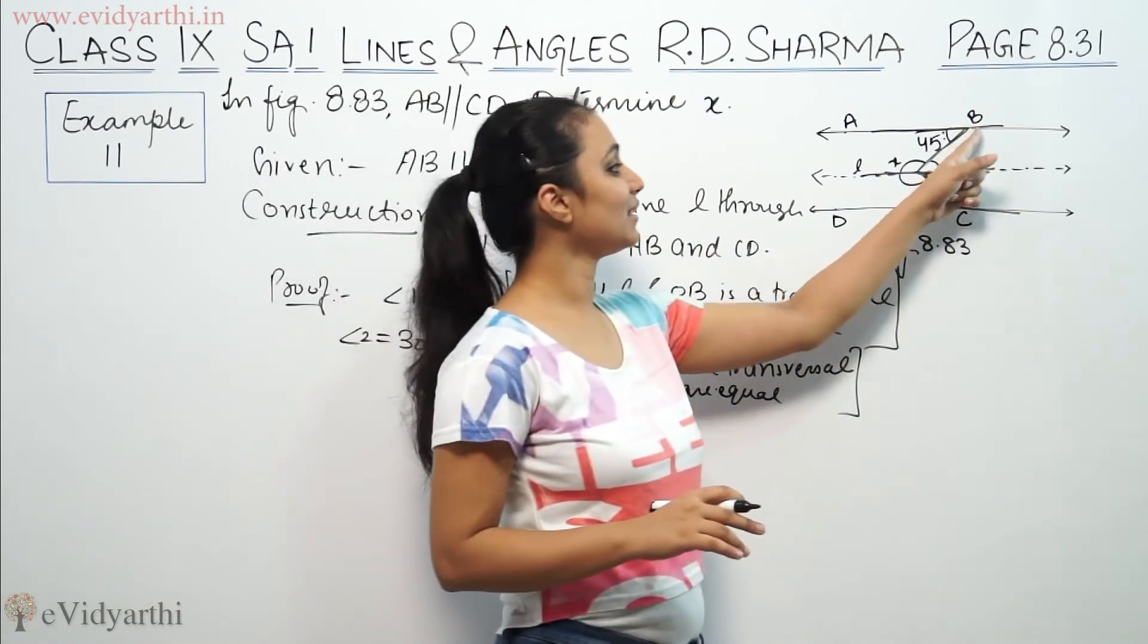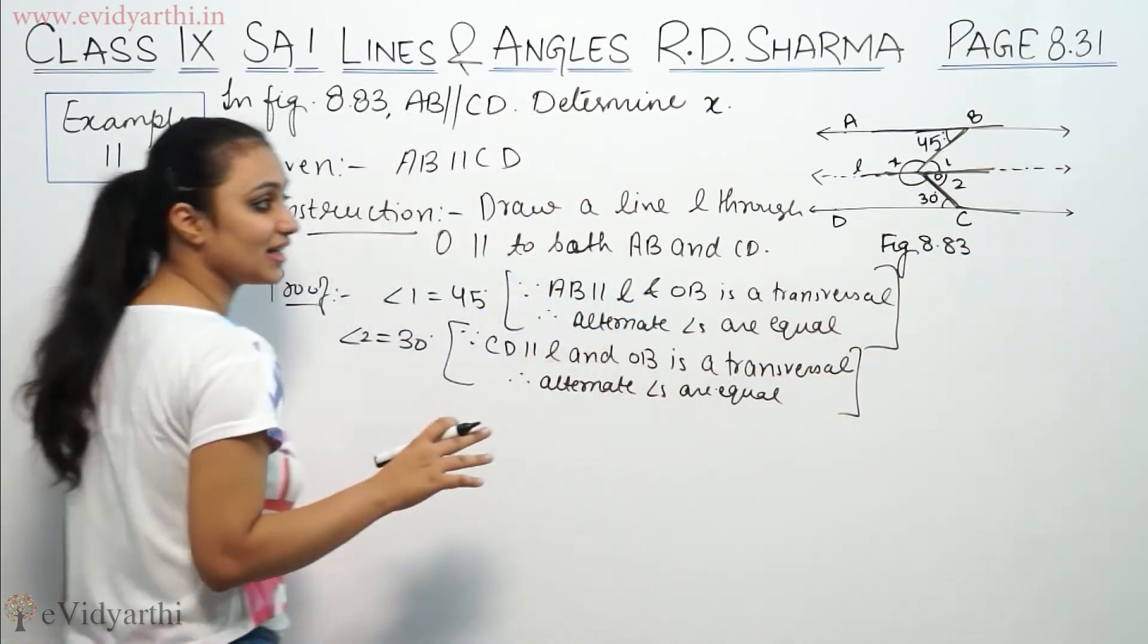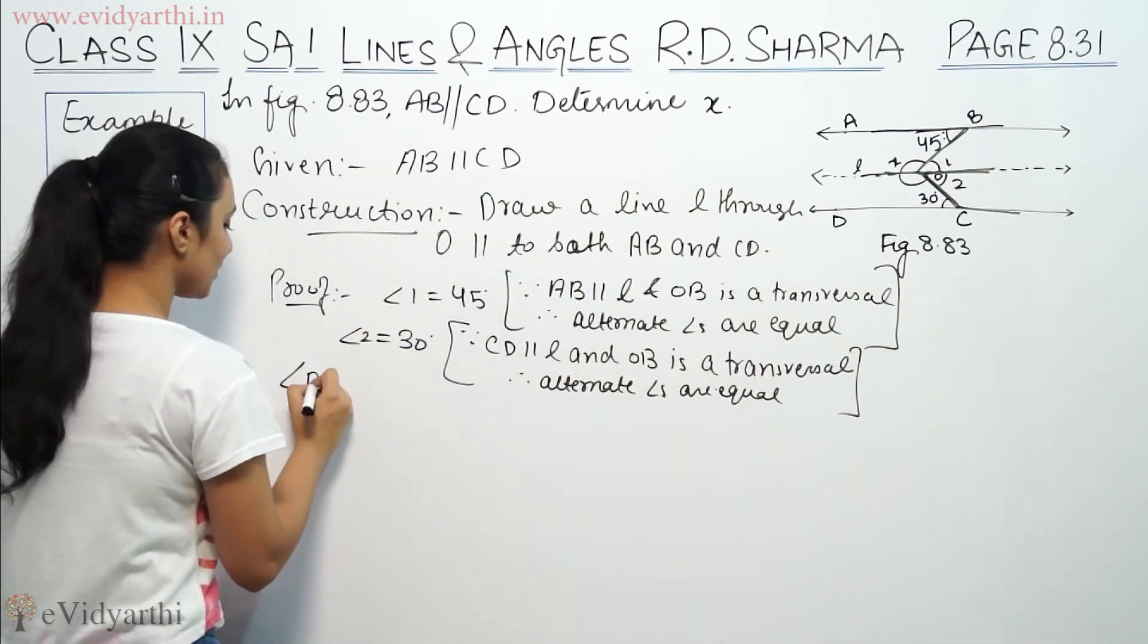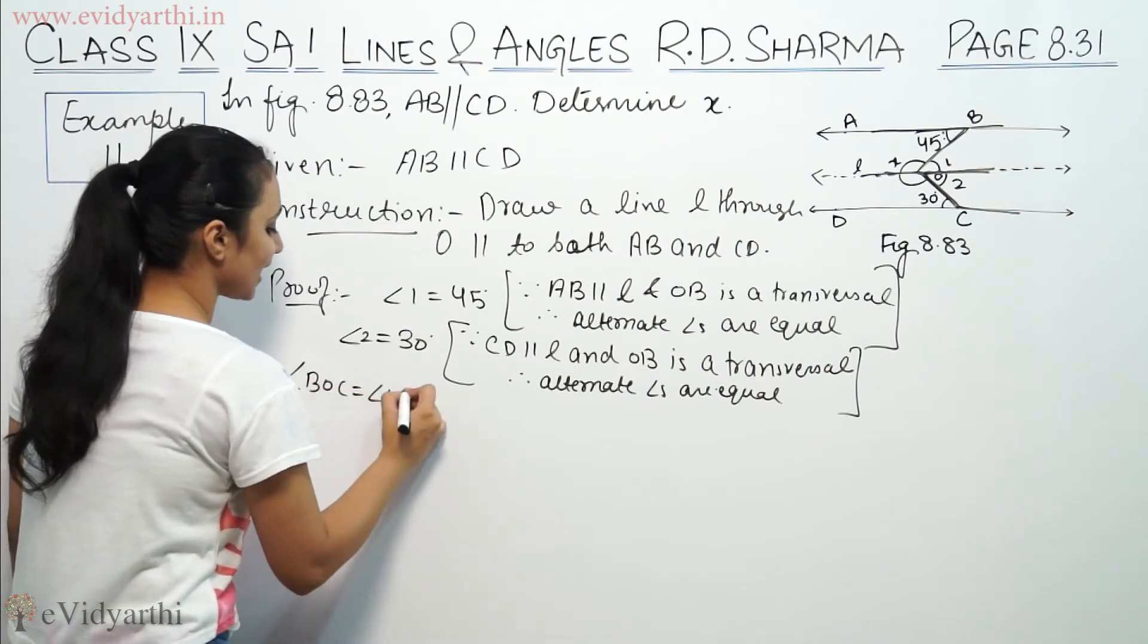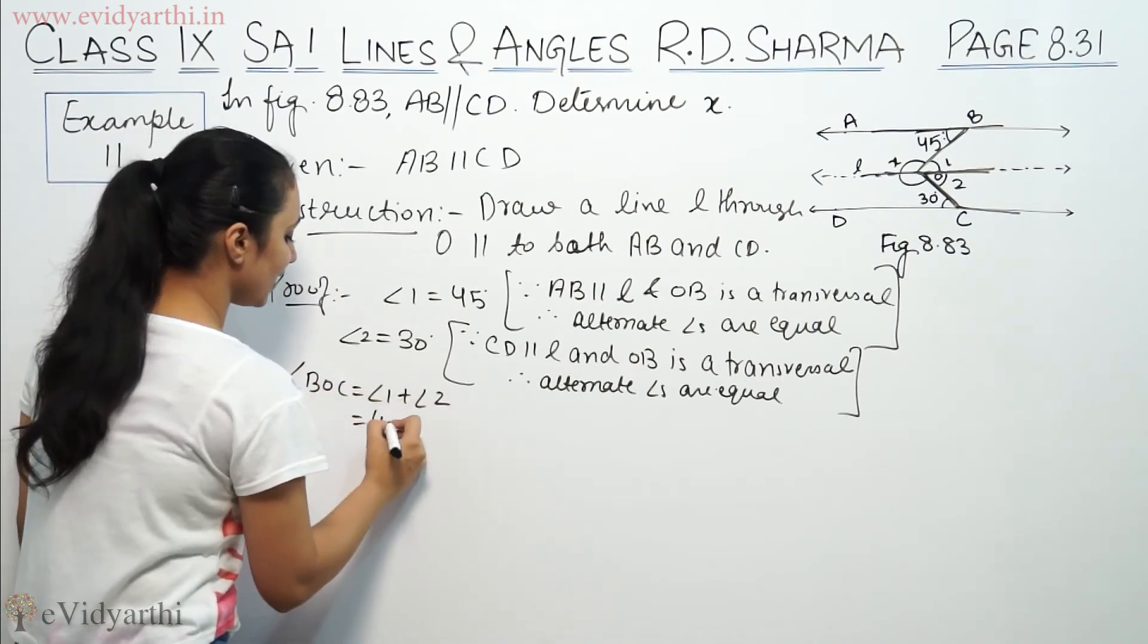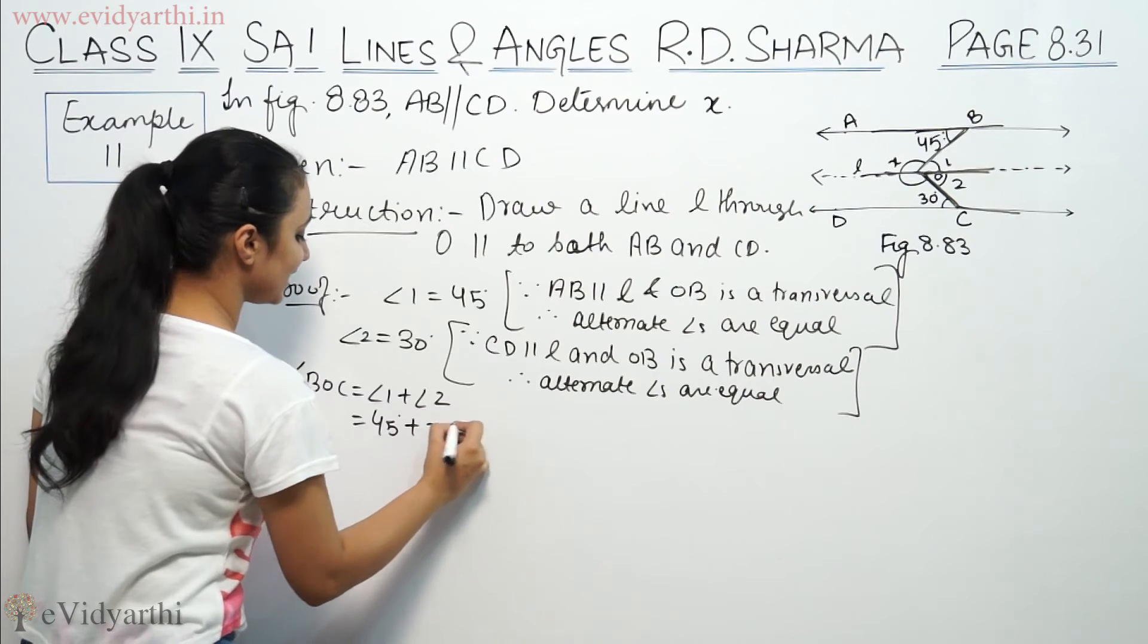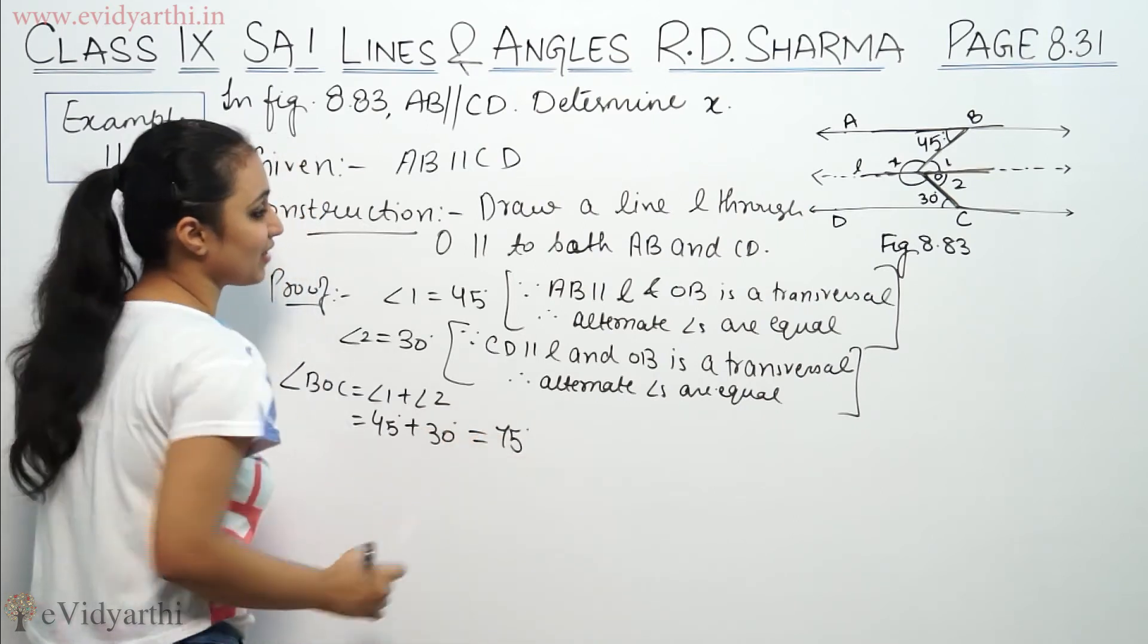Now angle BOC - this is angle BOC. We have to find x. BOC will equal angle 1 plus angle 2, because it has 2 angles. That will be 45 plus 30, which means 75 degrees.